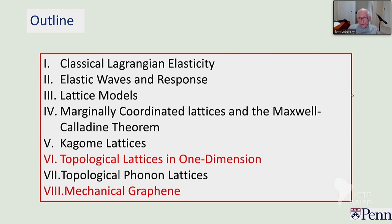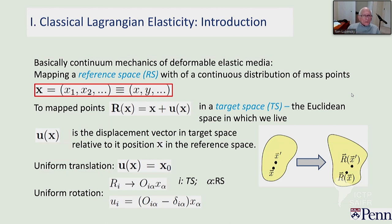You will be provided with a sort of 80-page write-up of the things that are in this. There are still some misprints in that, so you may get an update to the notes at some point as we go along. The notes have the relevant references — mostly from my own work and from review articles that I've written with others. So: classical Lagrangian elasticity. This is really just the continuum mechanics of a deformable elastic medium.